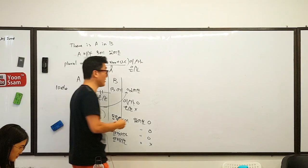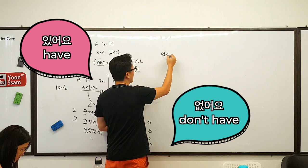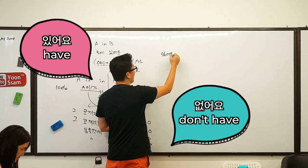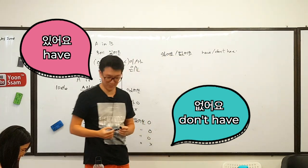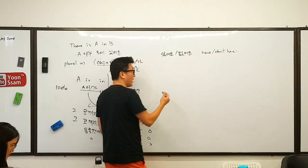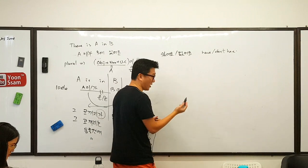Now moving on — 있어요, 없어요 has a meaning of 'have' and 'don't have'. Then how do we use 'have' and 'don't have' here?